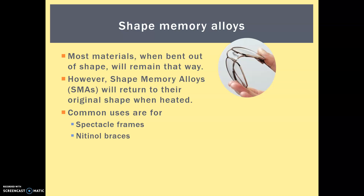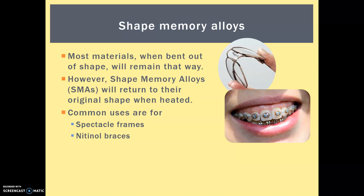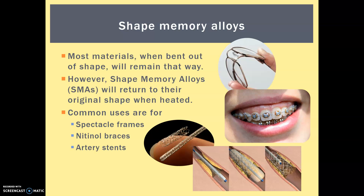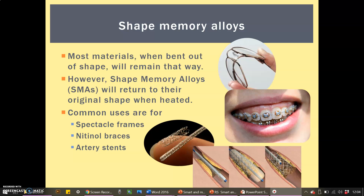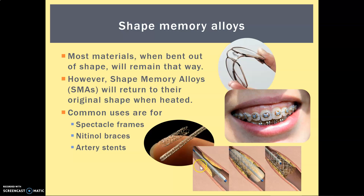They're also used in nitinol braces — nitinol is the commercial name for shape memory alloy, and you need to know this because the terms can be used interchangeably. The metal parts and wires in braces, when heated by the warmth of your body, cause your teeth to realign because they've already been set in that shape. They are also used in artery stents — the large arteries coming away from the heart can be damaged with plaques. Shape memory alloy stents start very small, go into the artery, and then the warmth of the body causes them to automatically expand, putting pressure on the plaque and allowing for easier blood flow.